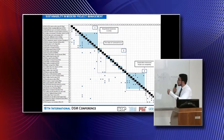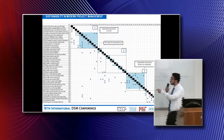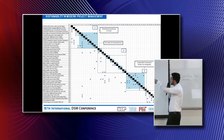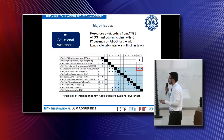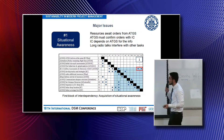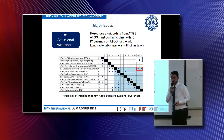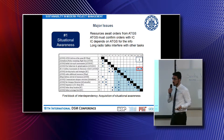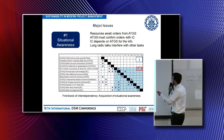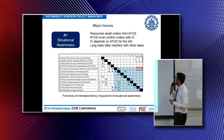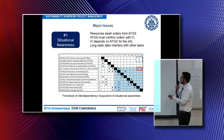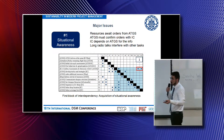Now I want to elaborate more about the problems identified by the DSM. The first one I call the situational awareness problem. It stems from the fact that resources, including the air tanker, await orders from the supervisor, and the supervisor must confirm orders with the incident commander, who in turn depends on the supervisor for information.